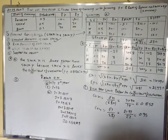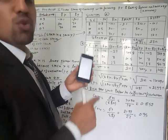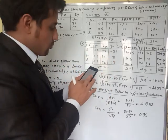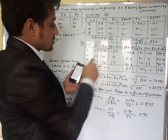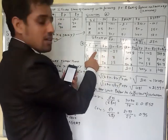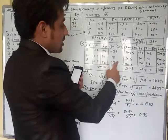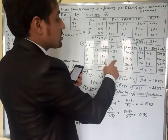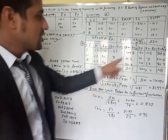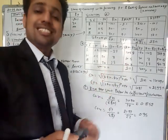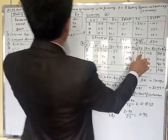Calculating variance for stock X: (−27)² = 729; 729 × 0.20 = 145.8. Next: 3² = 9; 9 × 0.5 = 4.5. Next: 13² = 169; 169 × 0.30 = 50.7. The summation of these values is called variance (sigma squared). So variance of X = 201.